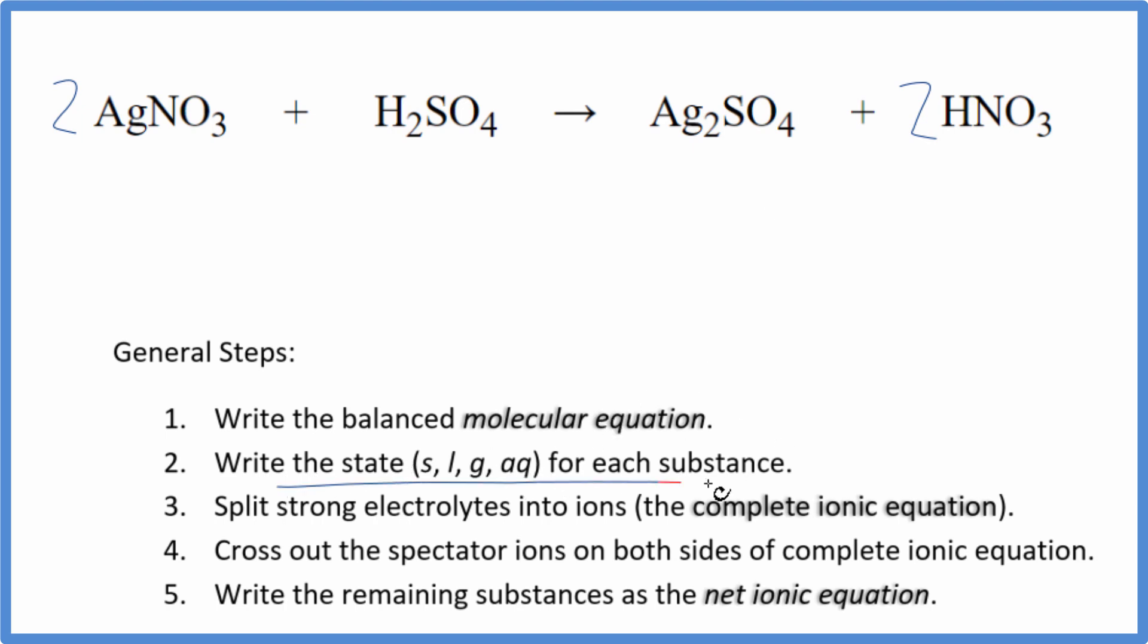Now I can write the state for each substance. Nitrates are very soluble if you know your solubility rules, so we're going to have aqueous. It's going to dissolve, dissociate, split apart into its ions. Sulfuric acid is a strong acid, so that will be aqueous as well.